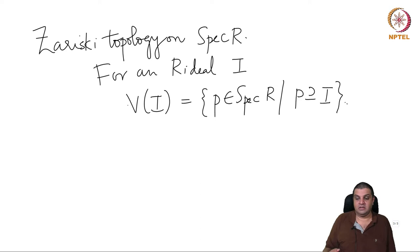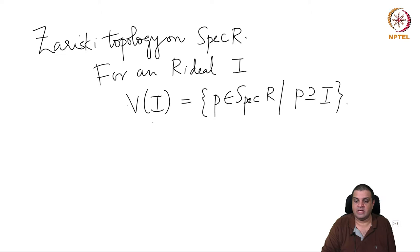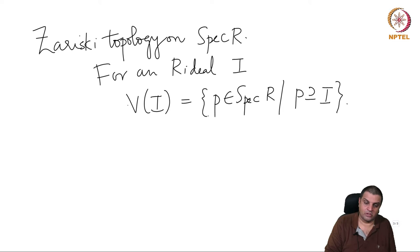V of I is the set of prime ideals in R such that P contains I. In some sense, this definition is analogous to the definition of V(I) in the case of a polynomial ring over a field, where V of I would be the points at which elements of I vanish. Points correspond to maximal ideals by Nullstellensatz, so there it would be equivalent to saying V of I is the maximal ideals that contain I. But that's not exactly enough for us to work in this generality, so we need to define V of I to be the subset of spec R with this property.